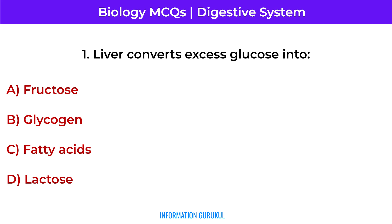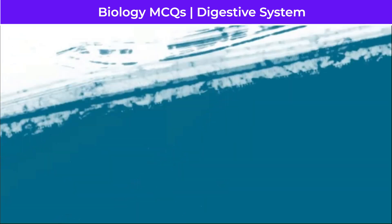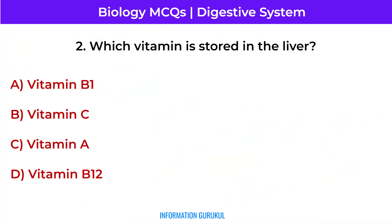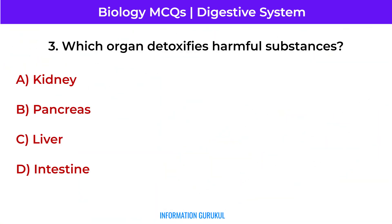The liver converts excess glucose into glycogen. Which vitamin is stored in the liver? Vitamin A. Which organ detoxifies harmful substances? The liver.